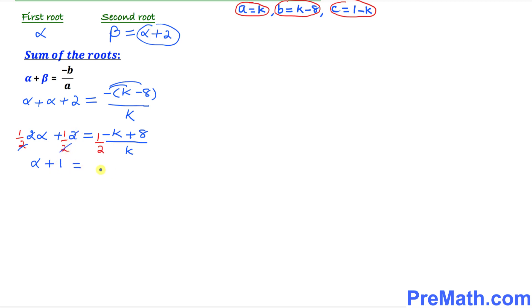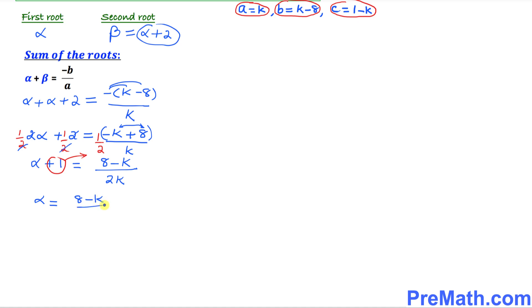So we have alpha + 1 = (8 − K)/(2K). Moving the 1 to the other side, alpha = (8 − K)/(2K) − 1.